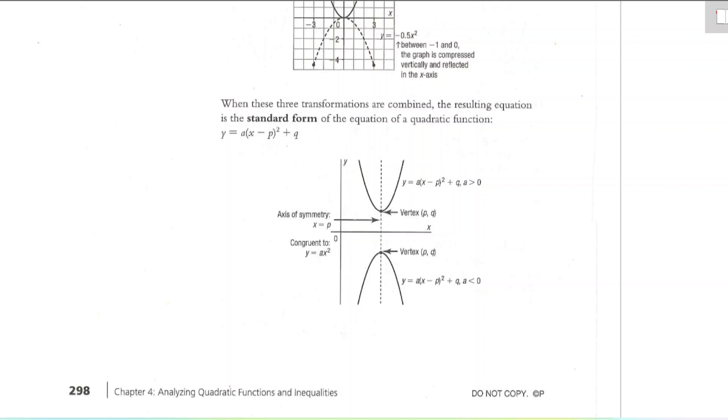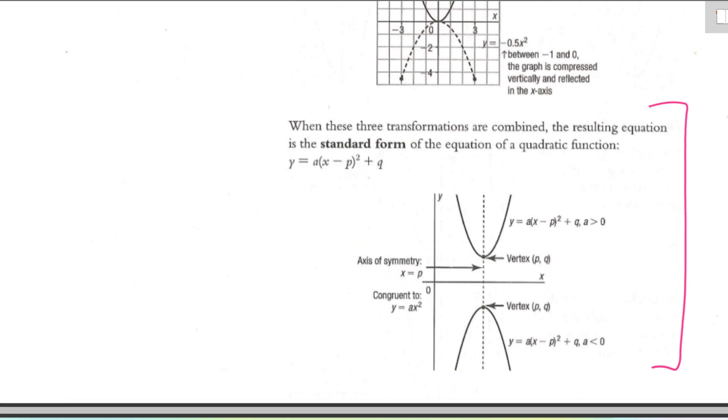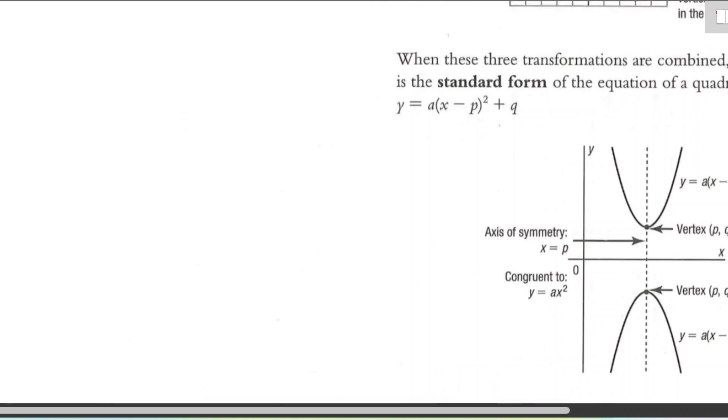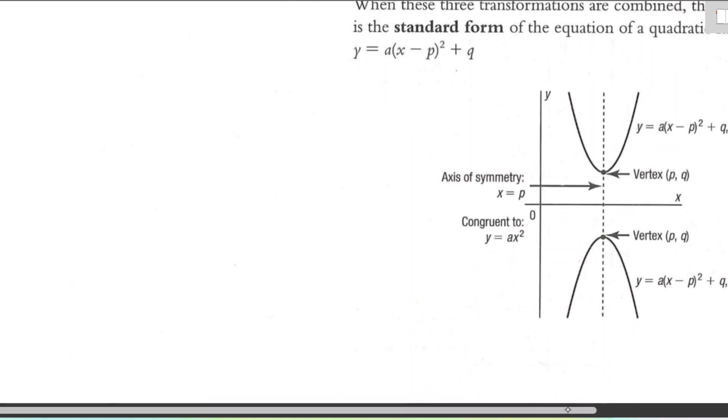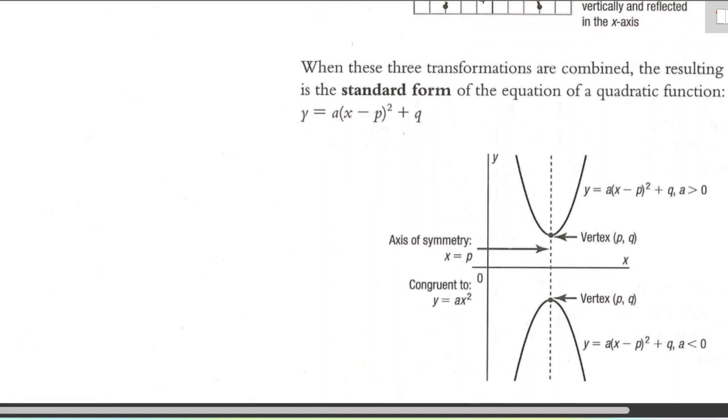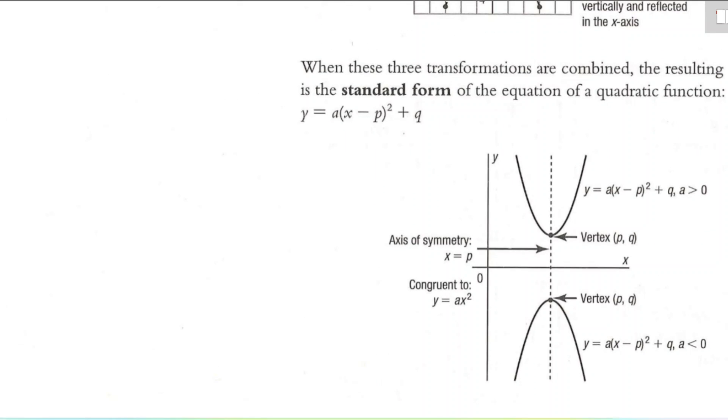Okay, so this is at the bottom of page 298. And this just summarizes what standard form equation looks like. So I'm just going to zoom in here. Here we go. Okay, so standard form is what the textbook calls it. But again, it might be called vertex form if you're using another resource.